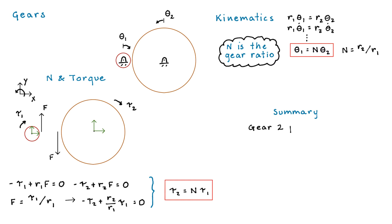So in summary, if we look at life from a gear 2 perspective, then the speed is reduced compared to what is happening with gear 1, and the torque is amplified.